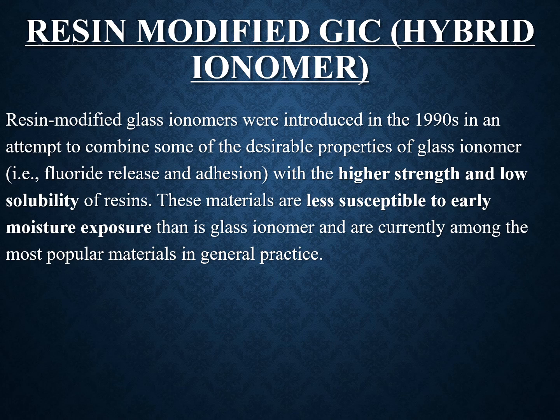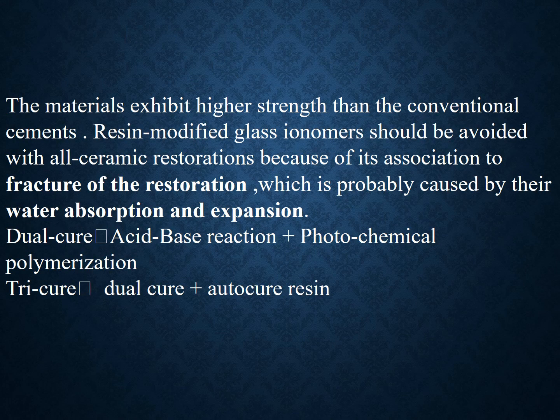Resin-modified glass ionomer (hybrid ionomer) was introduced in the 1990s as an attempt to combine the properties of glass ionomer with the higher strength and low solubility of resins. These materials are less susceptible to early moisture exposure than conventional glass ionomer and are currently among the most popular materials in general practice. They exhibit higher strength than conventional cements. However, resin-modified GIC should be avoided with all-ceramic restorations because it can be associated with fracture due to water absorption and expansion. There are also dual-cure and tri-cure types.